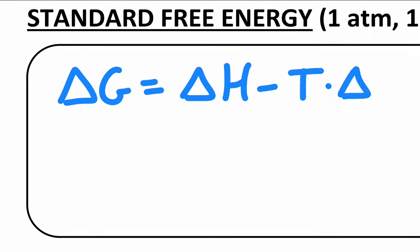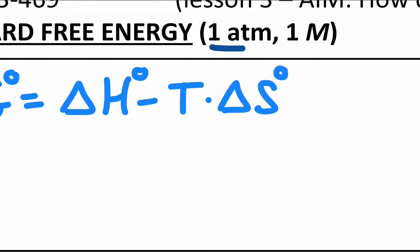Recall from the last lesson, we had an expression that says delta G is the change in enthalpy minus the temperature times the change in entropy. And we spent a lot of time looking at those reference values that are under standard conditions. So we use this superscript zero to denote standard state, standard conditions.